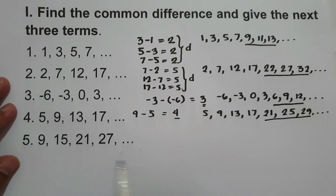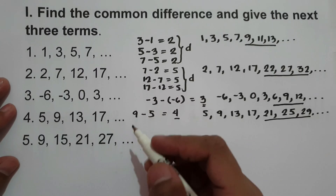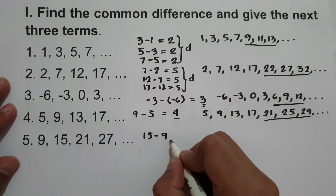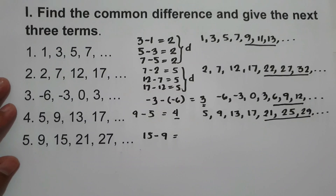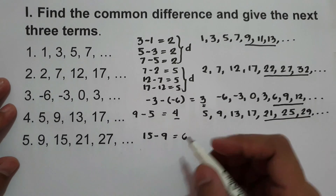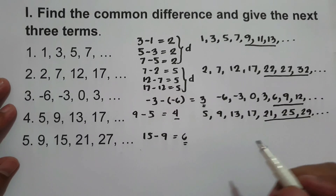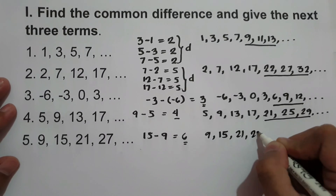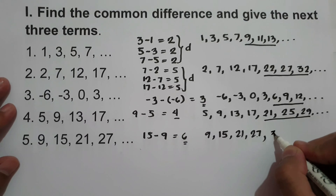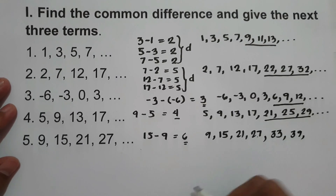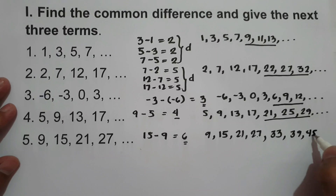What about number 5? We have 9, 15, 21, 27. Let's find first the common difference: 15 minus 9 is 6, 21 minus 15 is also 6, and 27 minus 21 is 6. Therefore the common difference is 6. The next three terms in the sequence 9, 15, 21, 27 are: 27 plus 6 is 33, 33 plus 6 is 39, and 39 plus 6 is 45. So the next three terms are 33, 39, and 45.